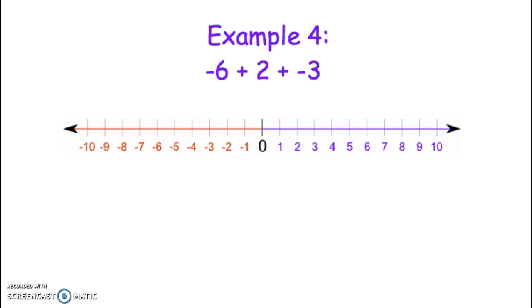And just check in and see how you did. So negative 6 plus 2 plus negative 3. So again, I'm going to start at 0 and I'm going to move left 6 to that negative 6 mark. Then I'm asked to add 2. So I'm going to add 2 by moving 2 to the right. Notice at this time, I've landed on negative 4.